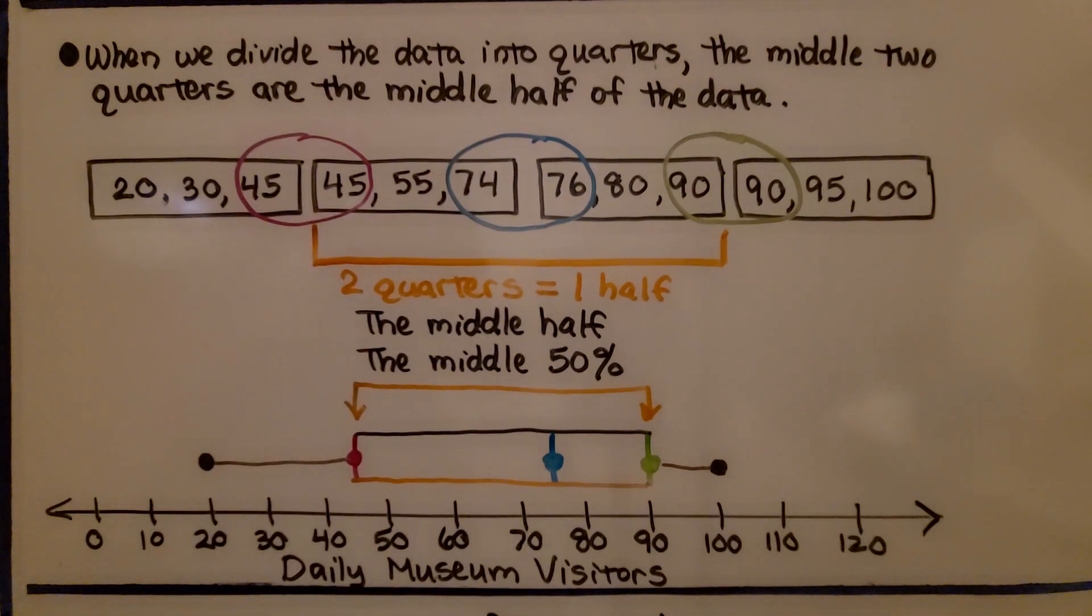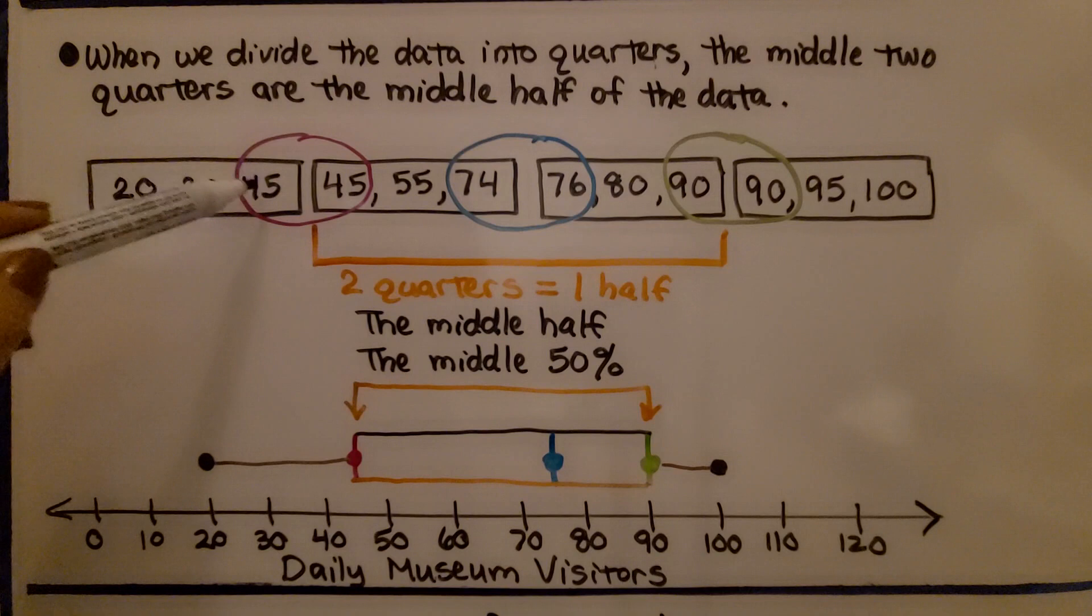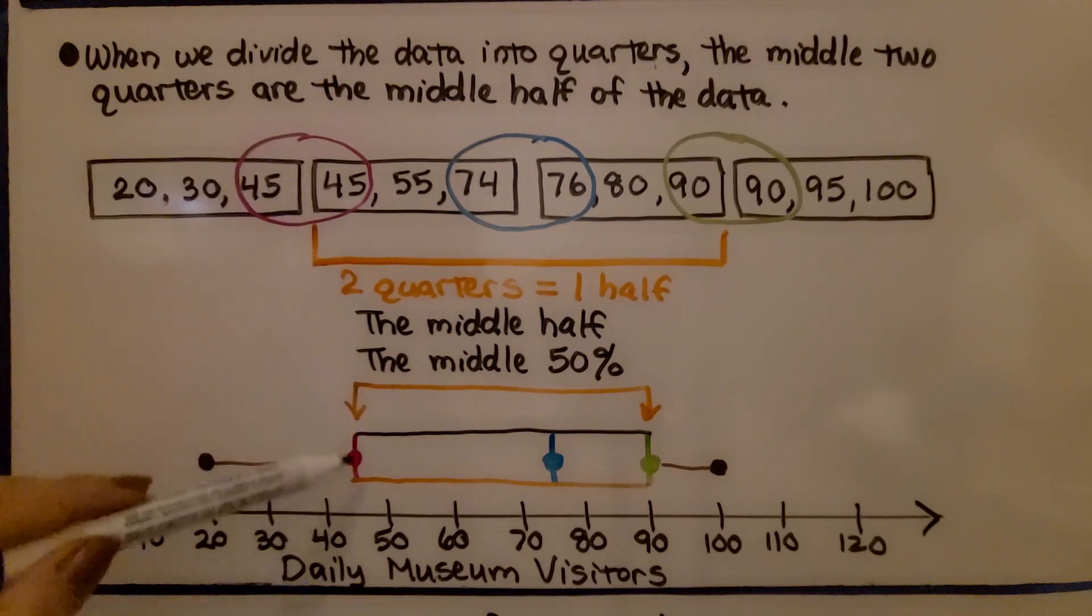That's the middle 50%. So on our box plot, this would be our middle 50%. It would be the IQR, the length of the box. So remember, for the first quartile, after we've split it into four quarters, we find the median of these two, and 45 and 45, so that would be 45.